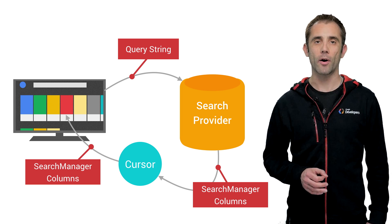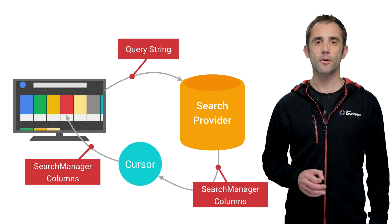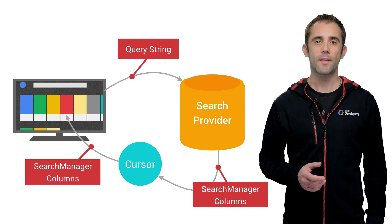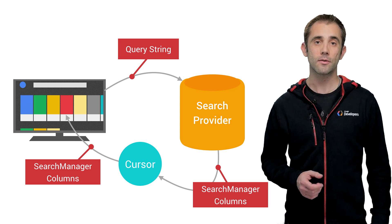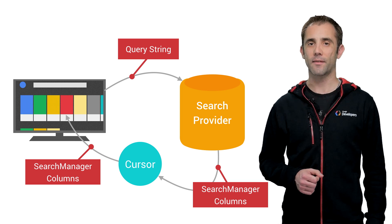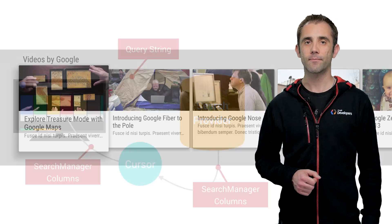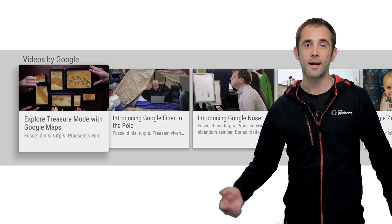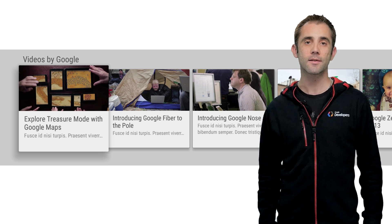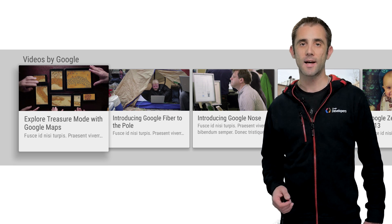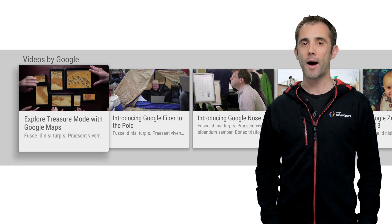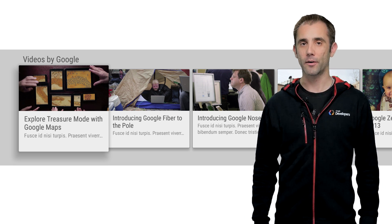The Android TV framework will then take your cursor and look it up using the same column names that you used, and display nice-looking result cards using the data that you provide. And that's it. You can verify this by installing your app to the device, performing a test query on Android TV, and you'll find that the results from your app are included.